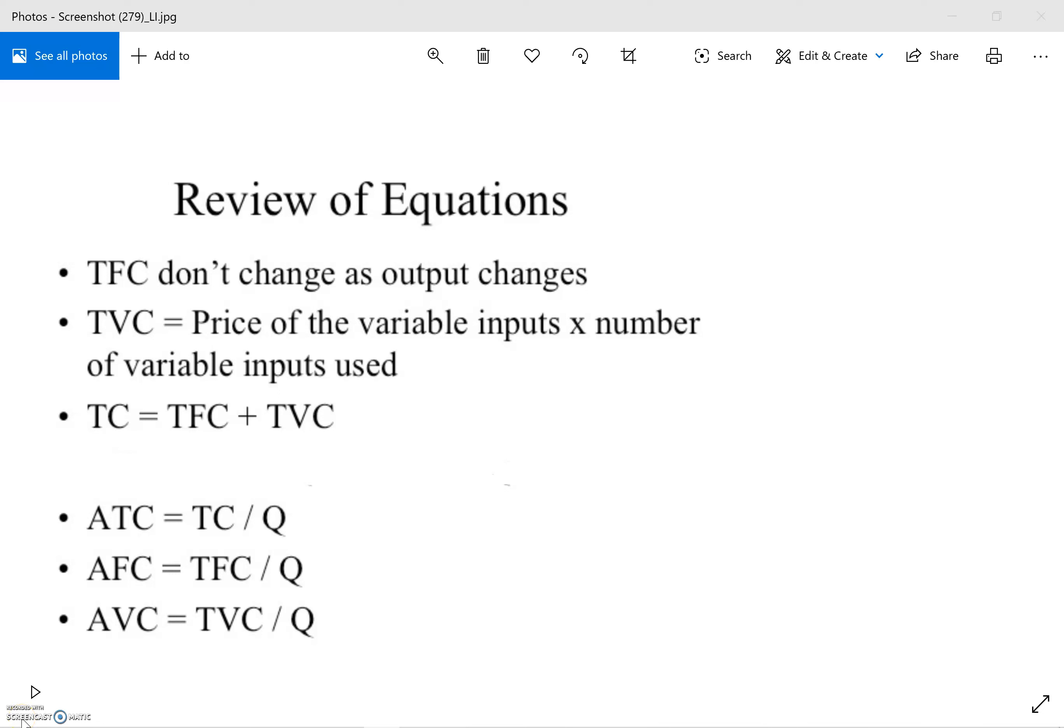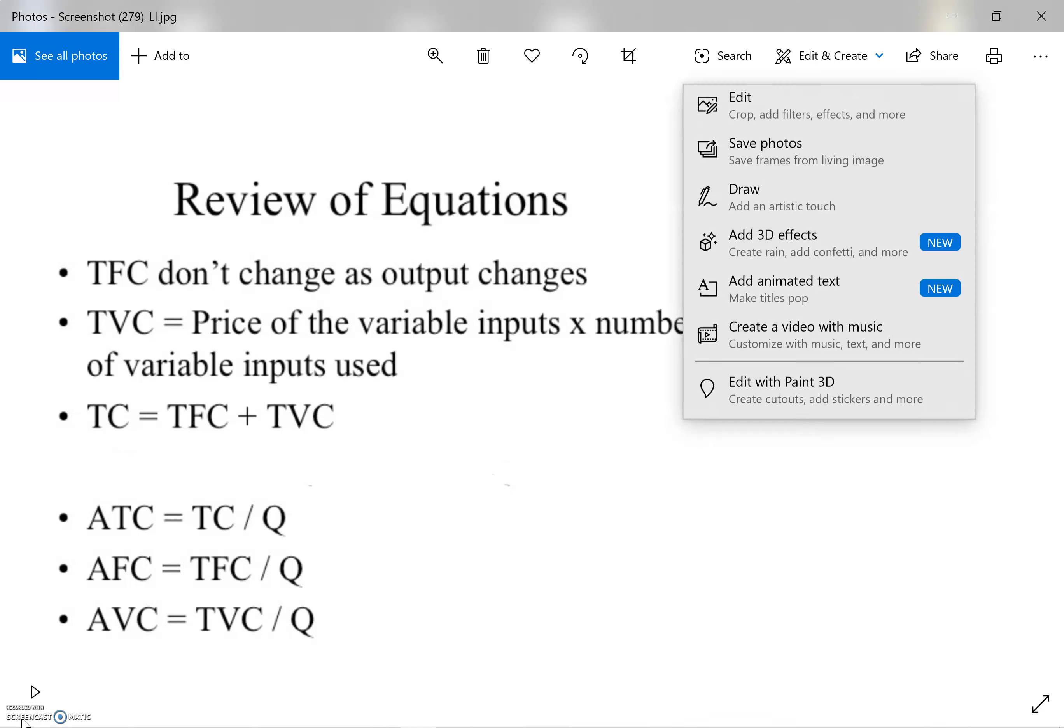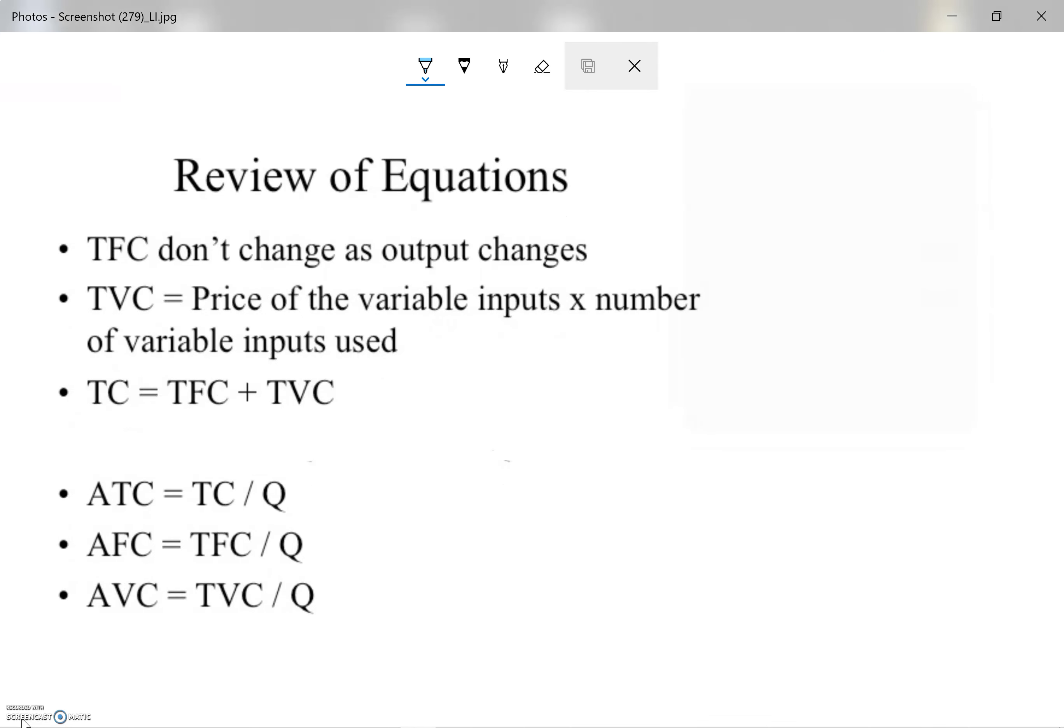Okay guys, so this is the fourth video. Let's have a quick review regarding the equations. As you can see, total fixed cost does not change, so it's always constant - the same number given. Total variable costs, usually it would be given and you multiply it by the number of units.